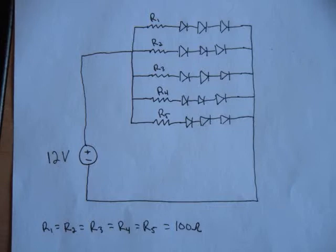We use a 100 ohm resistor for each branch so that we limit the current going through each diode to 30 milliamps so that it doesn't hurt the diodes.